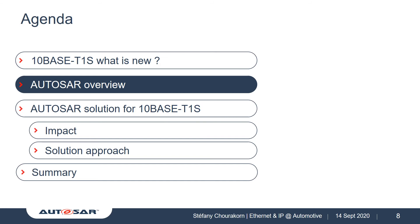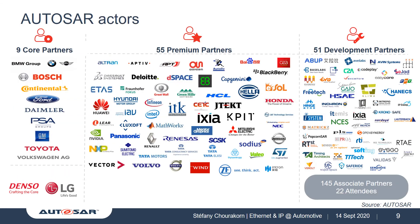Now that we went through 10BaseT1S main features, I would like to shortly introduce AUTOSAR to understand why this standard is very present in automotive. AUTOSAR is a consortium of many partners from the automotive world. The core partners are car manufacturers, but the majority of other actors are suppliers, software developers, service providers, and electronic companies such as semiconductor manufacturers. They all work together within working groups and contribute to improving or updating the standards to make their vision thrive.